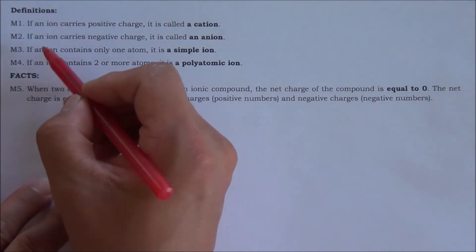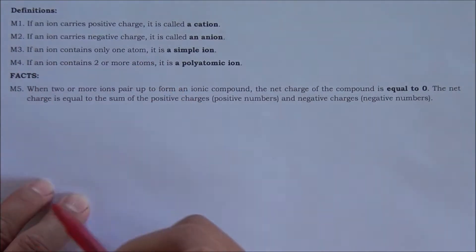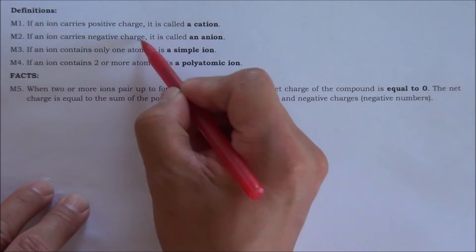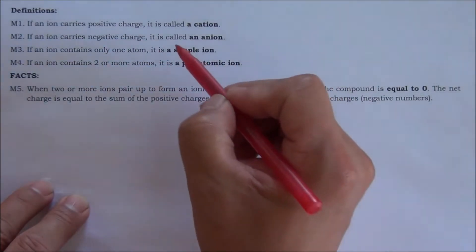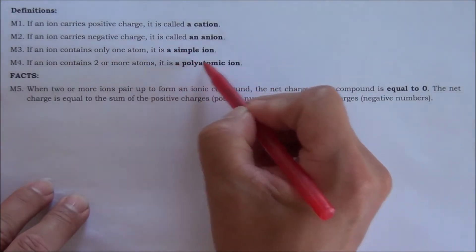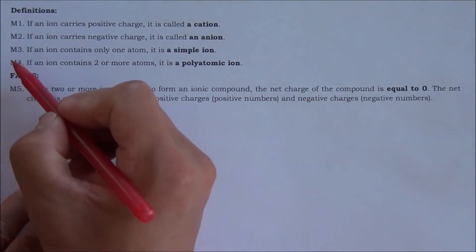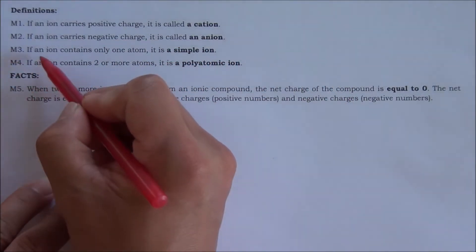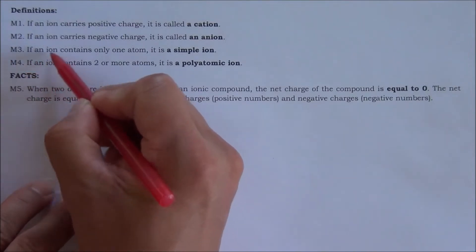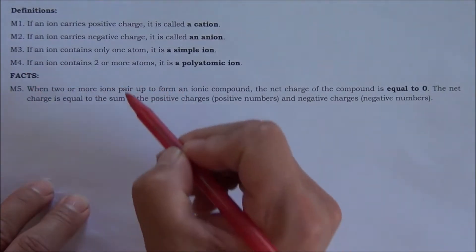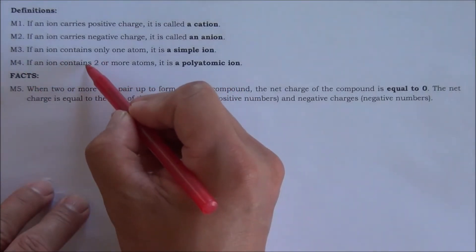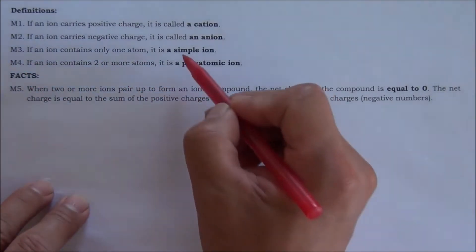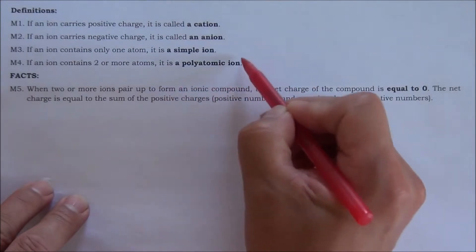Number three: if an ion contains only one atom, it is a simple ion. Number four: if an ion contains two or more atoms, it is a polyatomic ion.